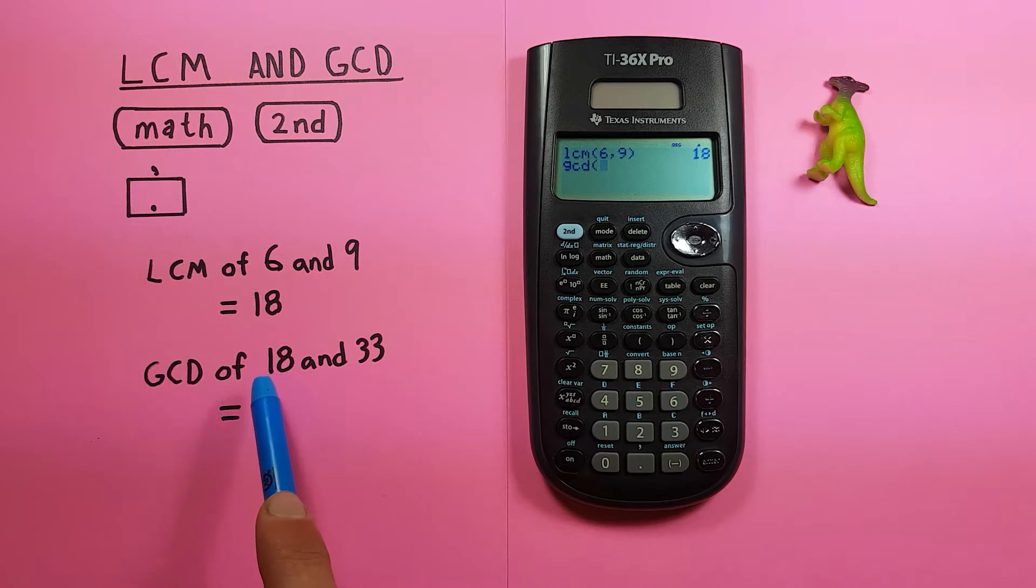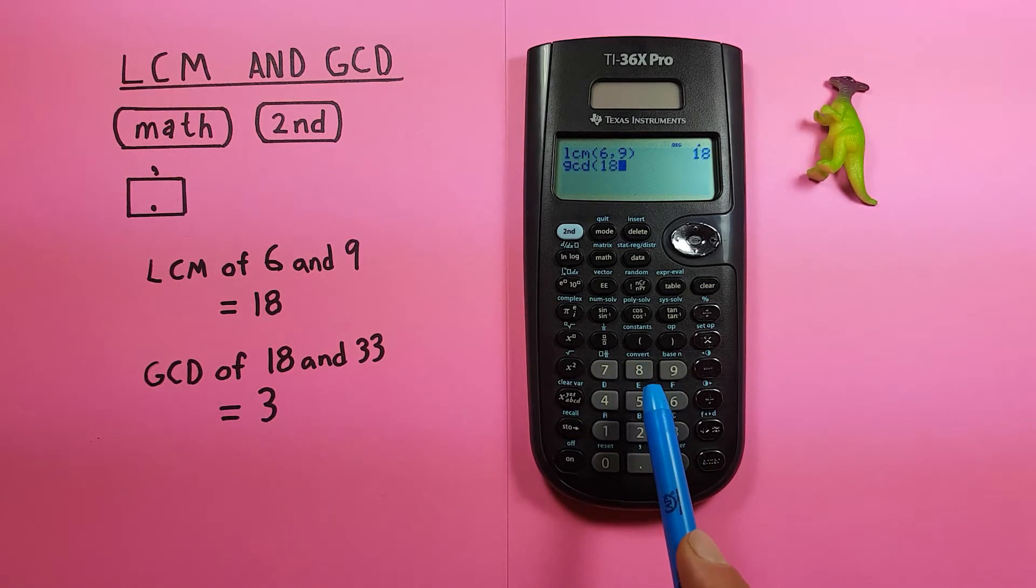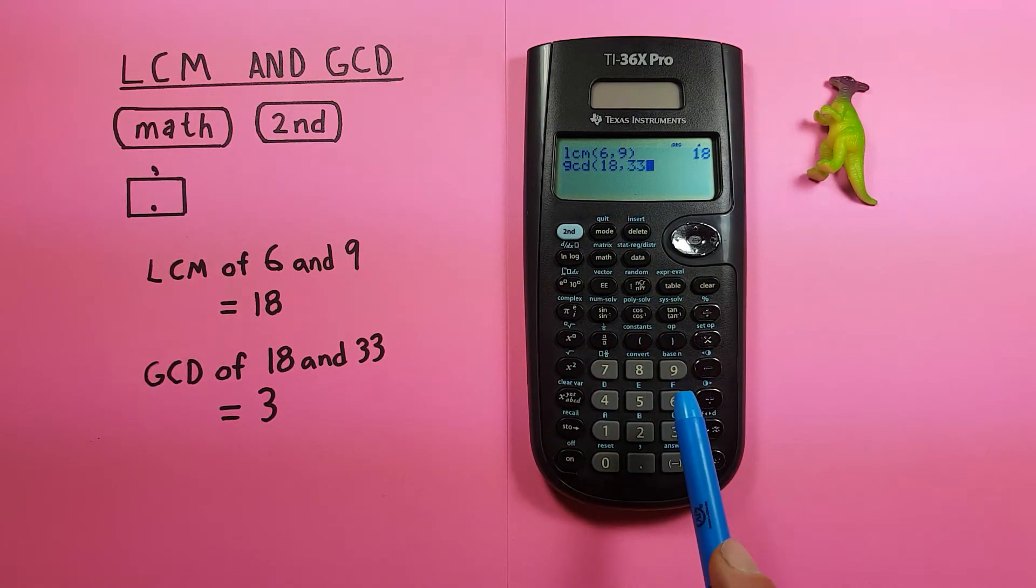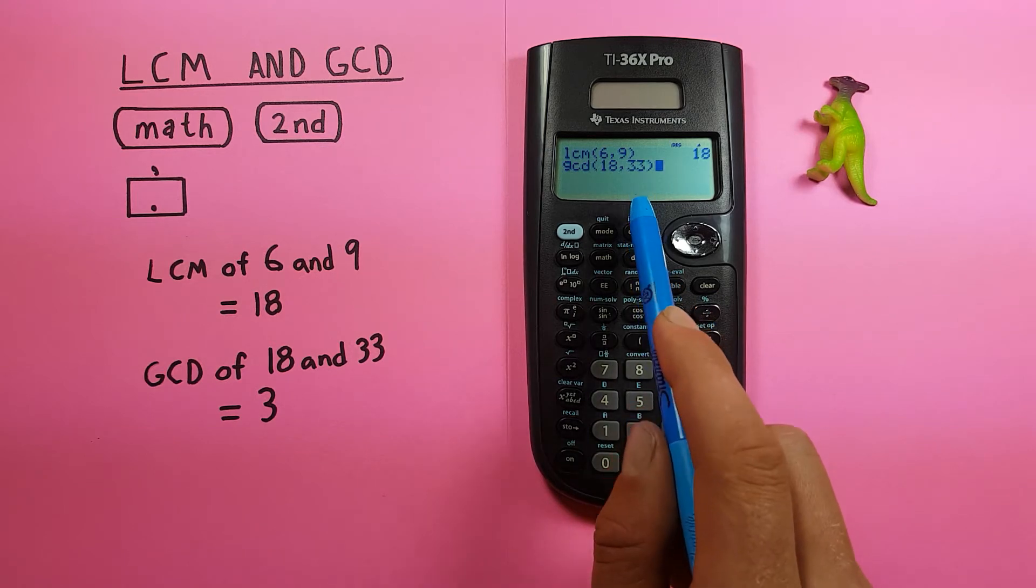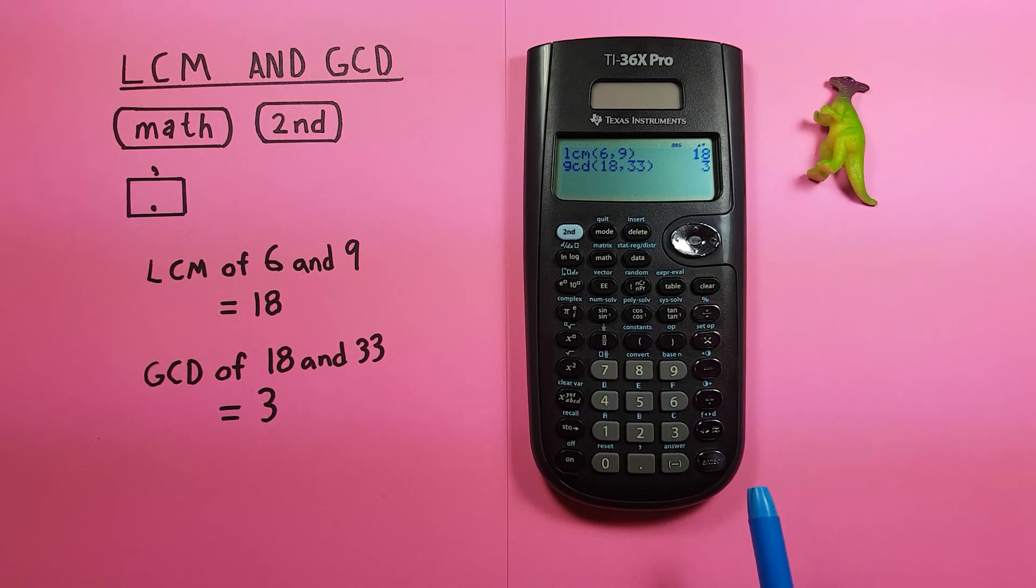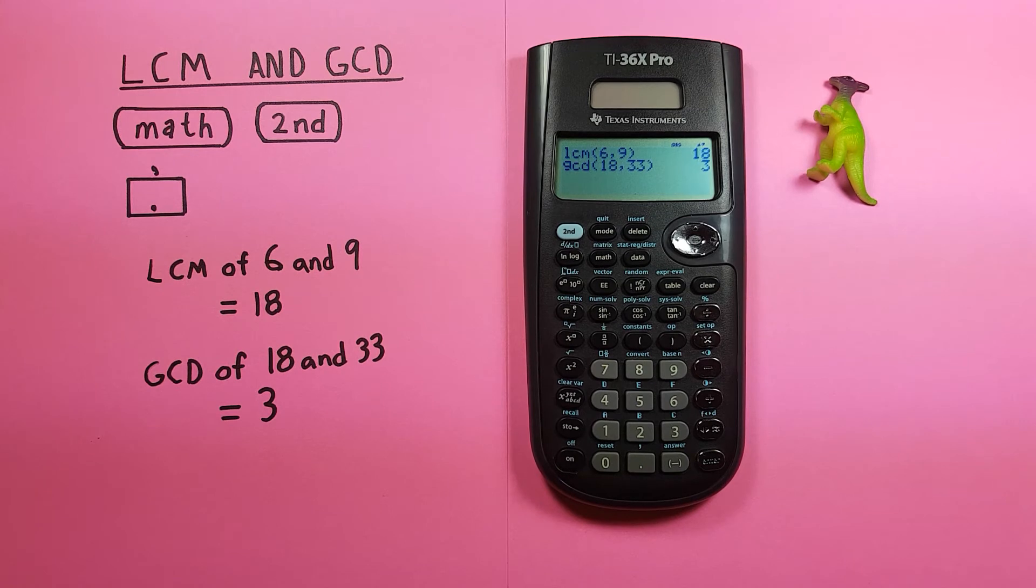Let's find the GCD of 18 and 33. We put 18 on there and then the second function period for our comma again and then 33 and close our bracket and press enter and get our result. The greatest common divisor of 18 and 33 is 3.